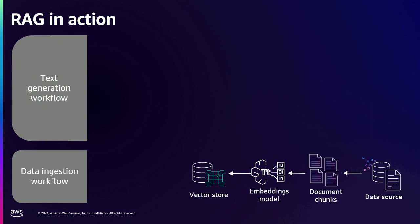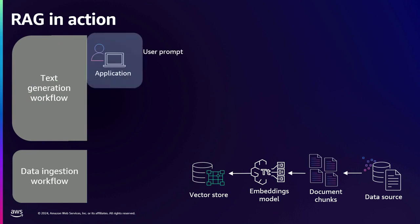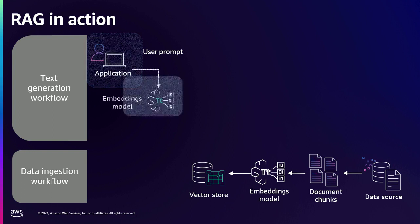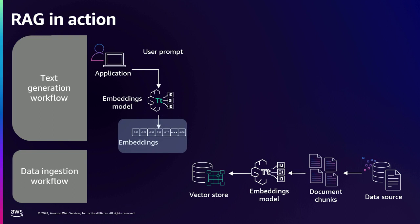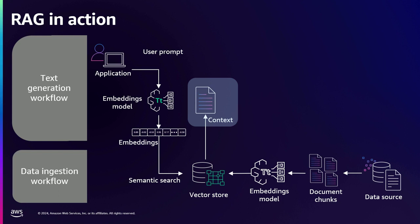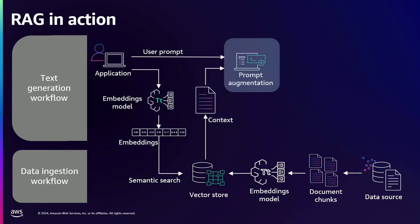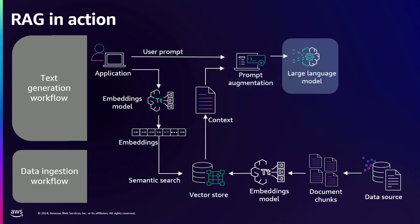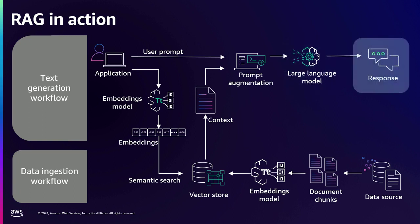The second part is the text generation workflow. This is where a user uses a chatbot or generative AI application and asks questions, chatting with documents. The user asks a question in natural language, which gets sent to the embedding model and converted into embeddings. We then search the vector database for similar documents. Once retrieved, we augment our prompt with those search results, and the augmented prompt is sent to a large language model, which creates the final response.